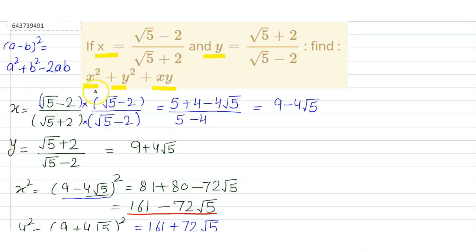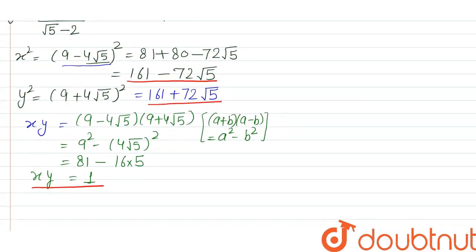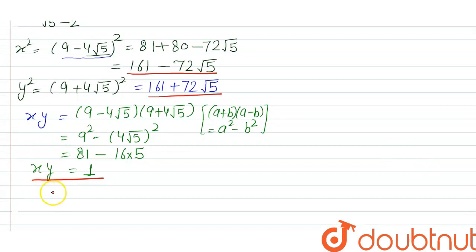Further in the question, we need to calculate x² + y² + xy. So let's calculate this expression. x² we are having 161 - 72√5. Finally it was required x² + y² + xy, so the value of x² is 161 - 72√5, then y² is 161 + 72√5.